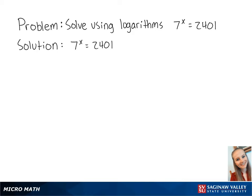For this problem, we want to solve for x using logarithms in the equation 7 to the x equals 2,401. 2,401 is equal to 7 to the 4th power, so we can rewrite this as 7 to the x equals 7 to the 4th power.